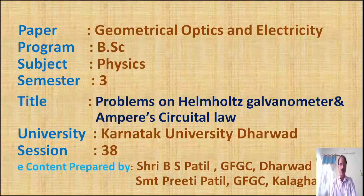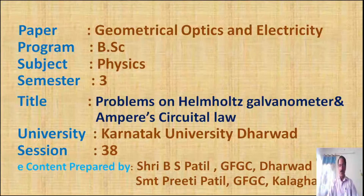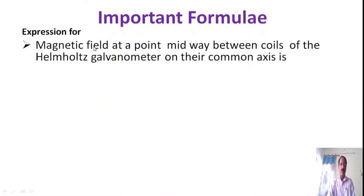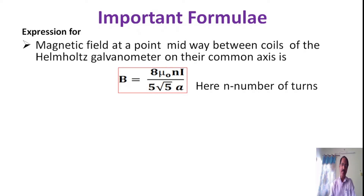Before going to solve numerical problems, let us recall the expressions which we derived in previous sessions. The important formula is the magnetic field at a point midway between the coils of the Helmholtz Galvanometer on their common axis. The magnetic field B can be written as 8 mu_0 ni over 5√5 into a. Here n is the number of turns, i is the current flowing through the Helmholtz Galvanometer, and a is the radius.